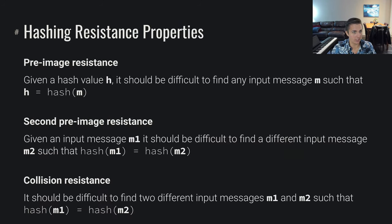Now there's a few properties that are super important for a cryptographic hash function. We need pre-image resistance. So what does that mean? It means that given a hash value h, it should be difficult to find any input message m such that h equals hash of m.